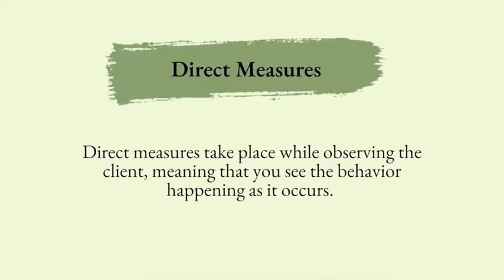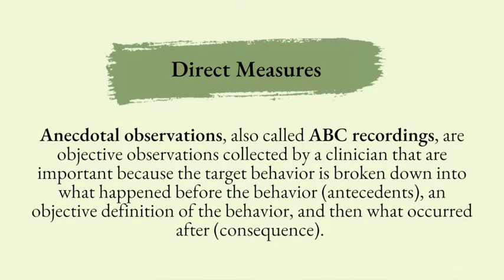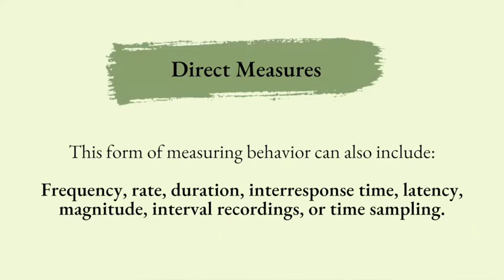First, let's talk about direct measures. Direct measures take place while observing the client, meaning that you see the behavior as soon as it happens. Anecdotal observations or ABC recordings are objective observations collected by a clinician. When they observe the target behavior, it's broken down into what happens before — the antecedent — the behavior itself, and what occurred after — the consequence. This form of measuring behavior can also include frequency, rate, duration, inter-response time, latency, magnitude, interval recordings, or time sampling.